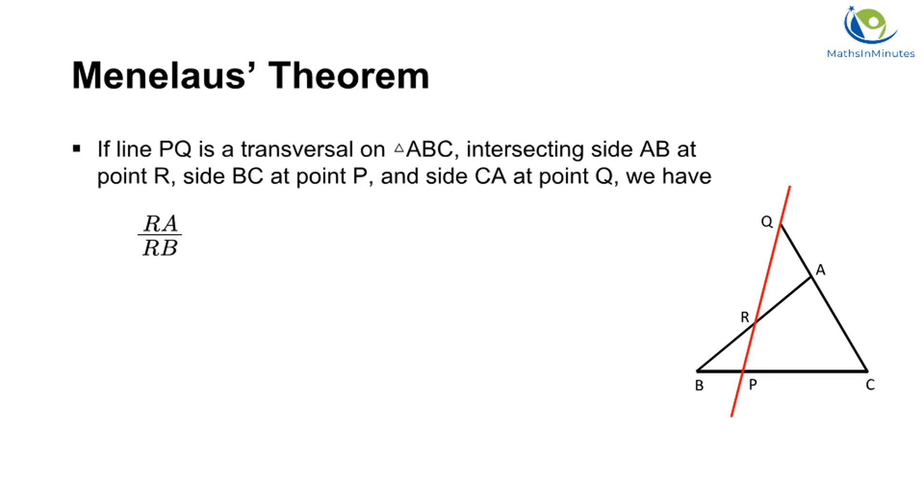If a transversal passes through a triangle, it creates six segments. The Menelaus Theorem is a theorem which relates these six segments on the triangle.